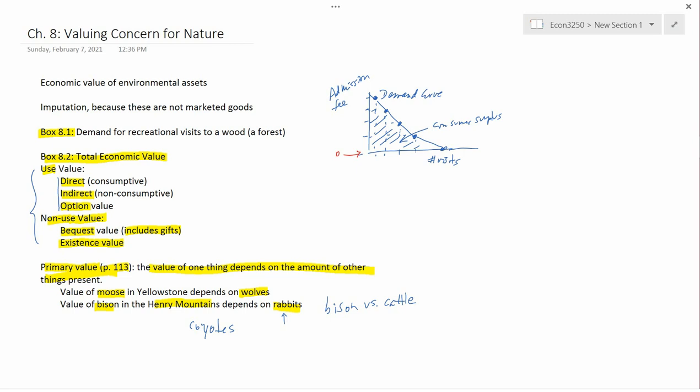So these are all examples of situations where the value of one thing here, one species, depends on the amount of other things present.